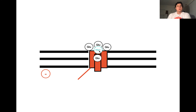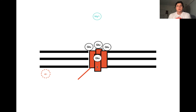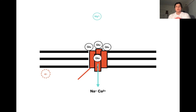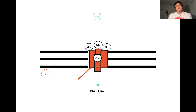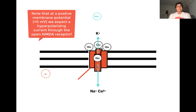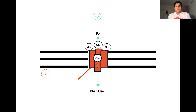When we slightly depolarize the cell to a less negative point, the magnesium is repelled from the NMDA receptor, reopening it and allowing current to pass through. The ions that flow through the NMDA receptor are the same as those through the open AMPA receptor — sodium and calcium flow down their electrochemical gradient into the cell, while potassium flows out. The main difference is that the NMDA receptor is much more permeable to calcium than the AMPA receptor. The net effect of the open NMDA receptor at a less negative membrane potential is a depolarization.